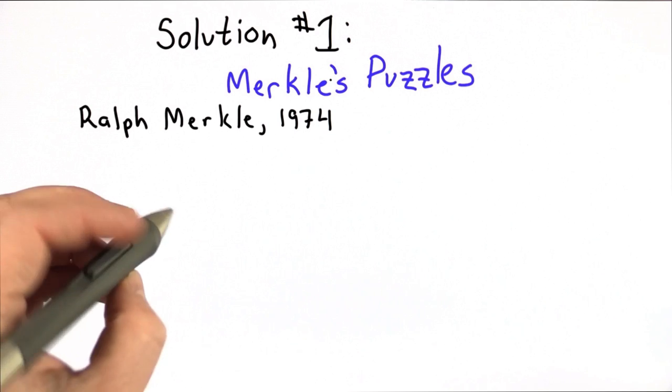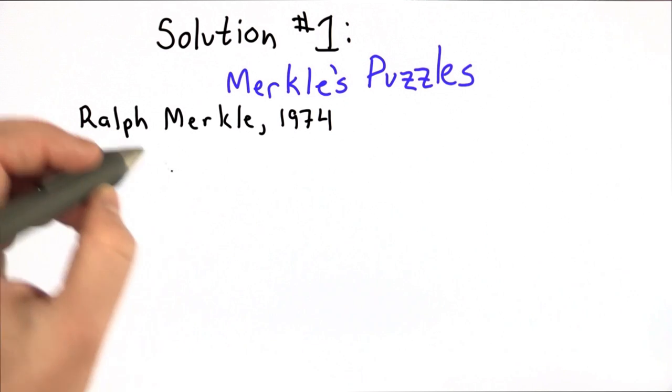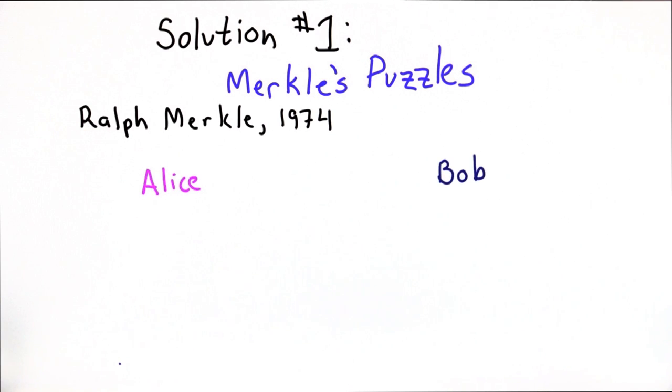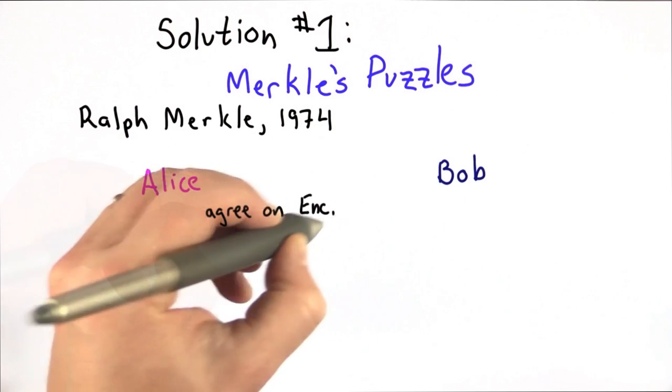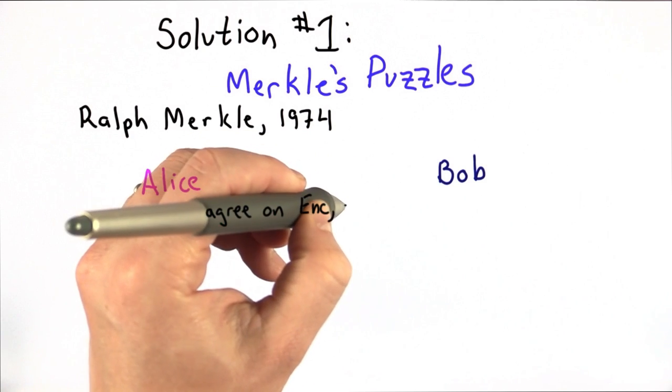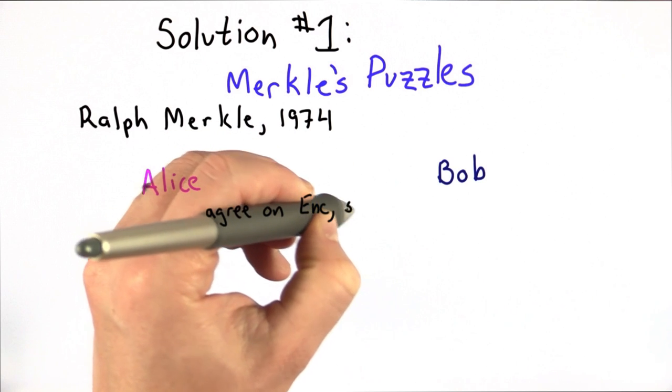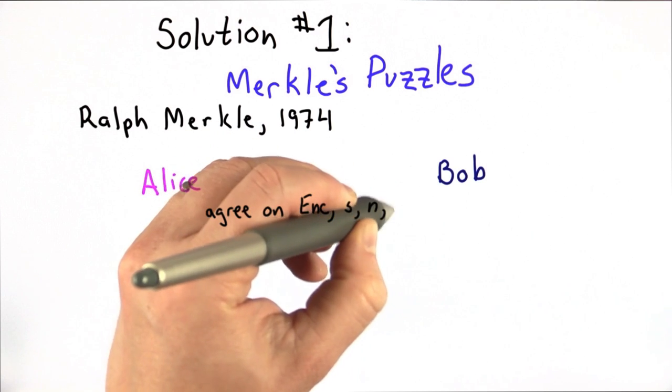The idea behind Merkle's puzzles is that you have two parties that want to share a key, and we'll call them Alice and Bob as usual. First, they have to agree on some parameters. They agree on an encryption function and security parameters s, n, and uppercase N.